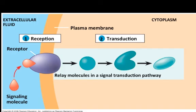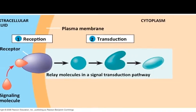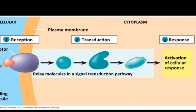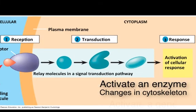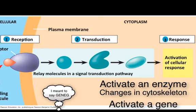Transduction involves a series of steps, usually involving a chain reaction of changing the conformation of several linked proteins. These changes end up creating some change in cell activity called the response. The response can be the activation of an enzyme, changes in the cytoskeleton for the cell to move, or the activation of specific enzymes.